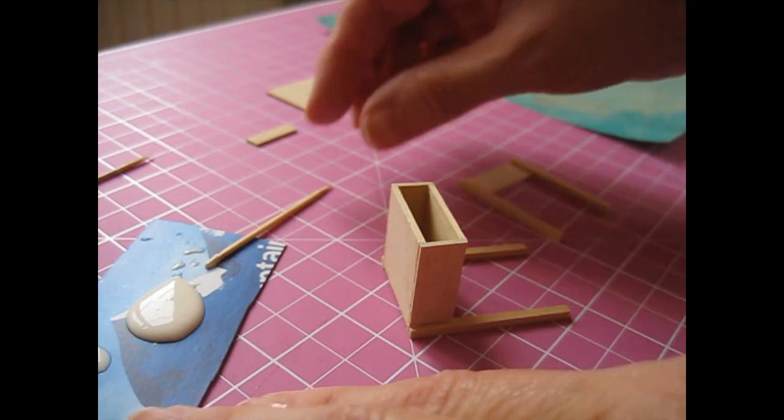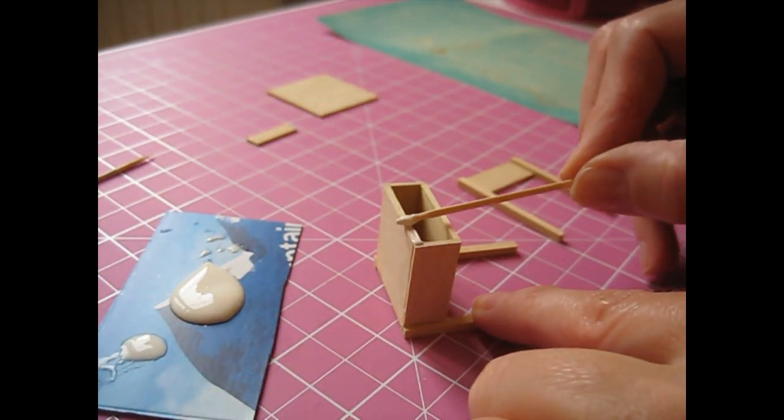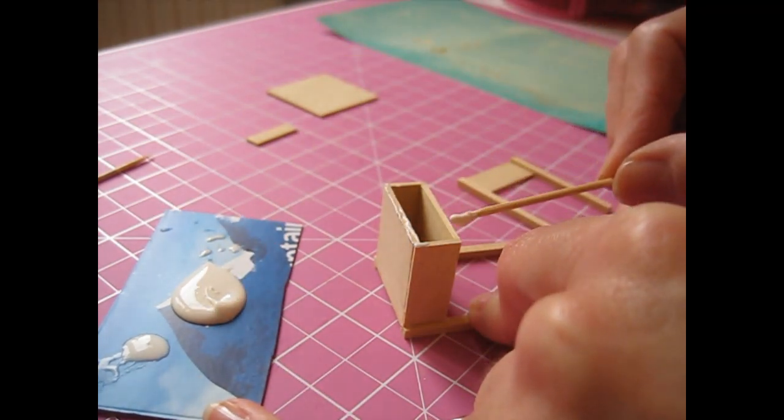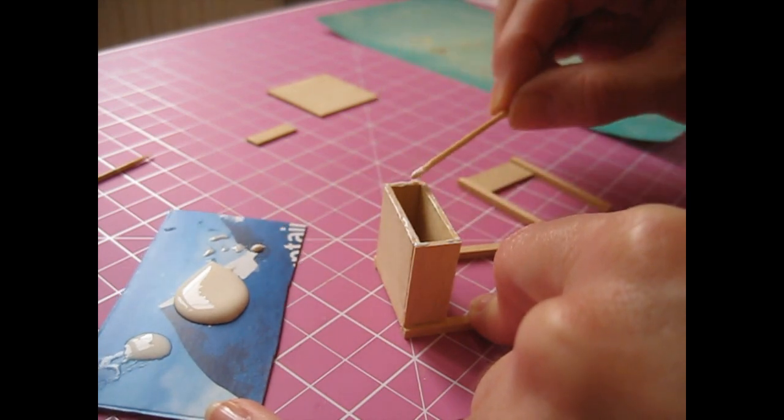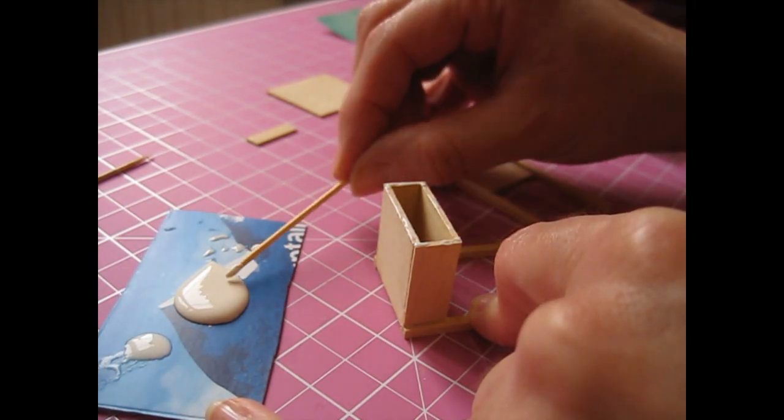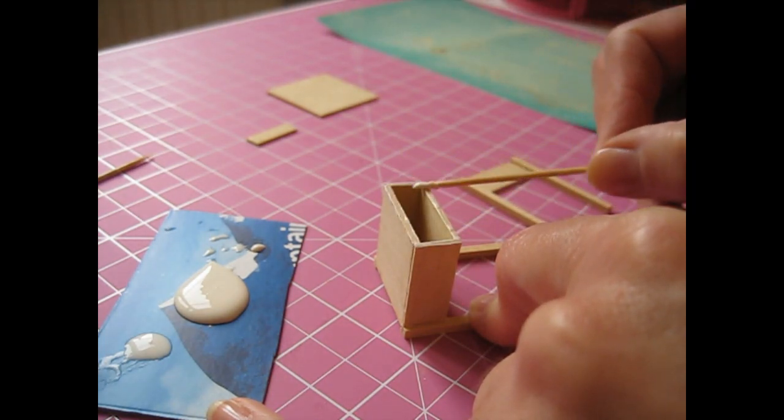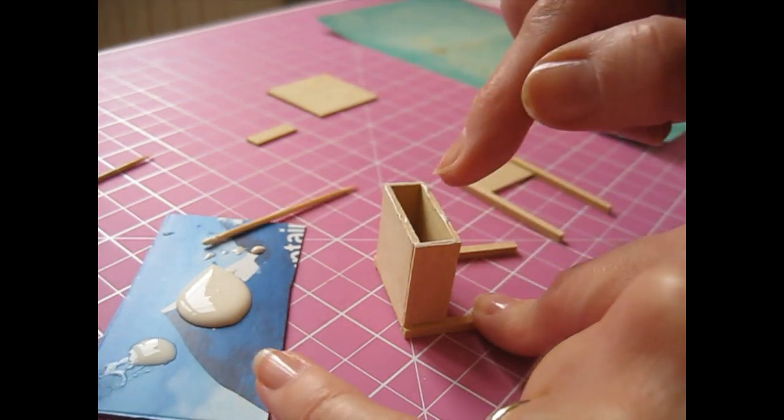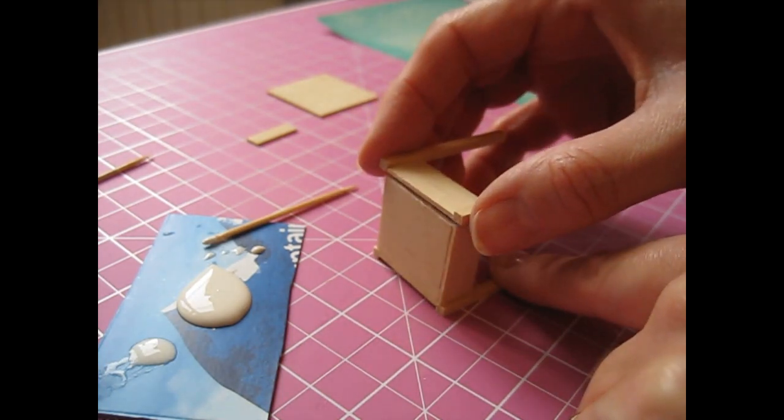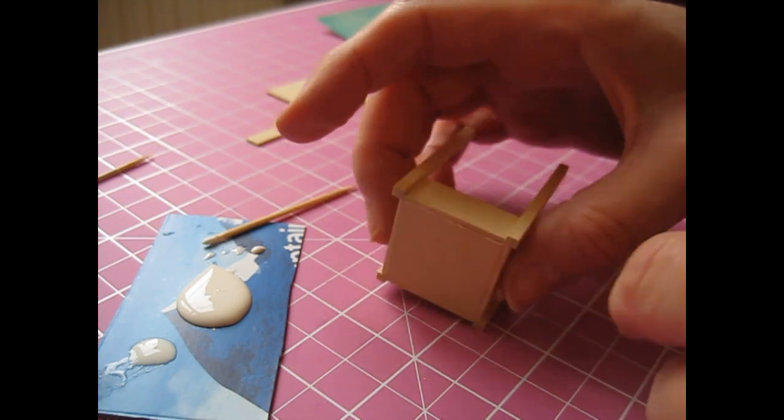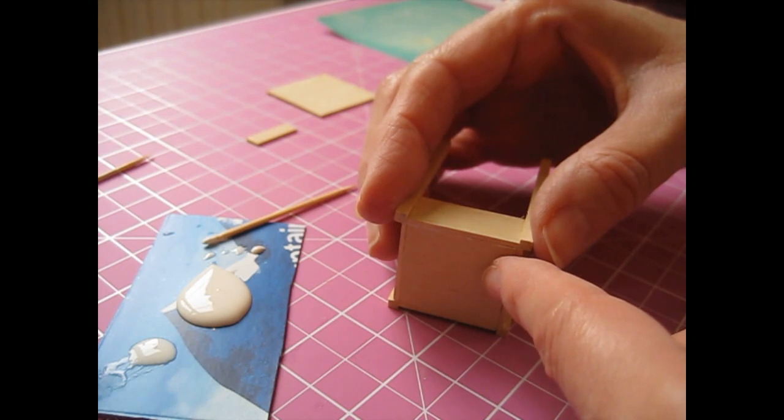We're now ready to attach the remaining side piece. Apply glue around these open edges. I've got a little box area like that. I'm always tempted just to pop something inside that nobody will ever see.